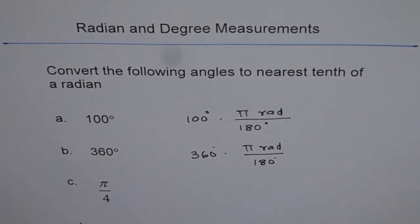This is already in radians, so just use a calculator and find the answer. So let me do two of them for you. Let's say 100 times pi divided by 180 will give us 1.7453.